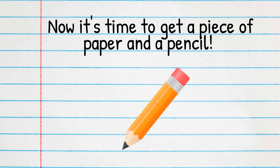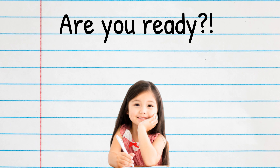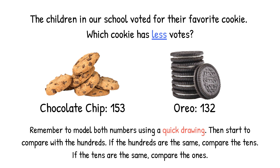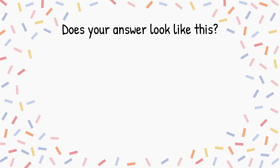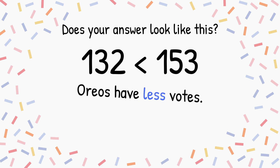Now it's time to get a piece of paper and a pencil. Are you ready? Let's practice. The children in our school voted for their favorite cookie. Which cookie has less votes? Remember to model both numbers using a quick drawing, then start to compare with the hundreds. If the hundreds are the same, compare the tens. If the tens are the same, compare the ones. Press pause to give yourself more work time, then press play when you have your answer. Does your answer look like this? 132 is less than 153. Oreos have less votes. Awesome job!